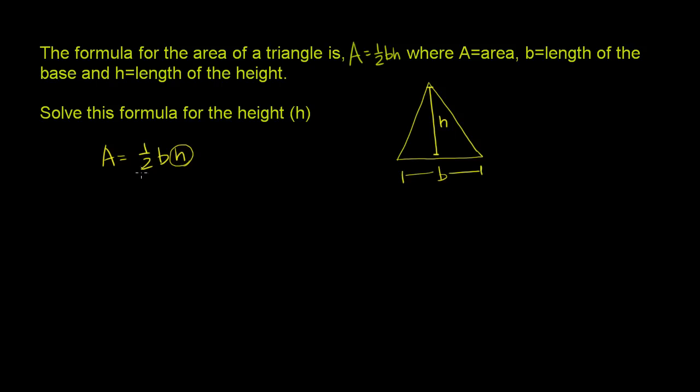Let's see if we can get rid of this 1/2. The best way to get rid of a 1/2, and it's being multiplied by h, is if we multiply both sides of the equation by its reciprocal. If we multiply both sides of the equation by 2 over 1, or by 2. So let's do that. Let's multiply.